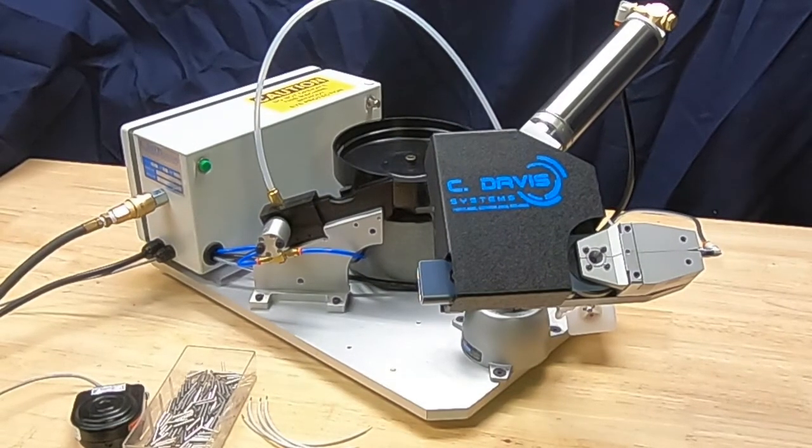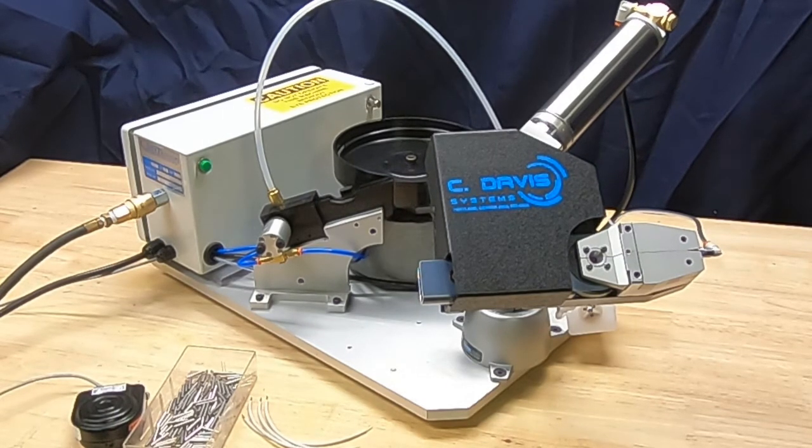This is a demonstration video for the C. Davis Systems and Software LC crimp machine. It is our entry-level machine for crimping machined and mil-spec contacts.